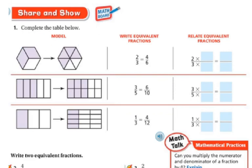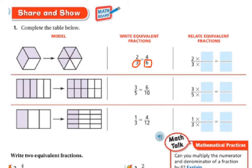Share and show — let's complete the table model. Here they're broken into 3rds and this one is broken into 6ths. They're saying 2/3 is equivalent to 4/6. Here's my related fraction. I think: what can I do to the bottom number to make it 6? Well, 3 times 2 is 6. So if I multiply the bottom by 2, I get 6. Whatever I do to the bottom I have to do to the top — so 2 times 2 is 4. So 4/6 and 2/3 are equivalent.